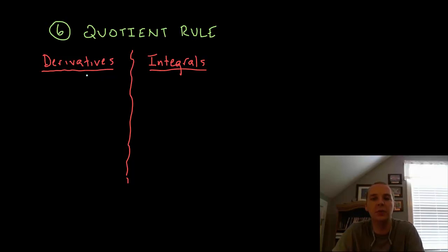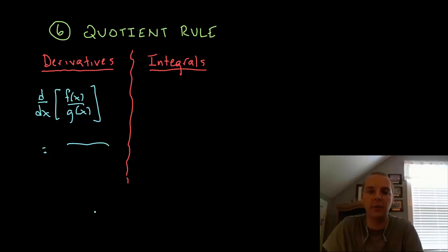The same thing is true with the quotient rule. We know that if you take the derivative with respect to x of f of x over g of x there's a long drawn out expression that would give you this derivative called the quotient rule. It's kind of long and drawn out so forgive me for not writing it. It's not really the point of this video. What I want to illustrate though is there's no good integral version of the quotient rule.